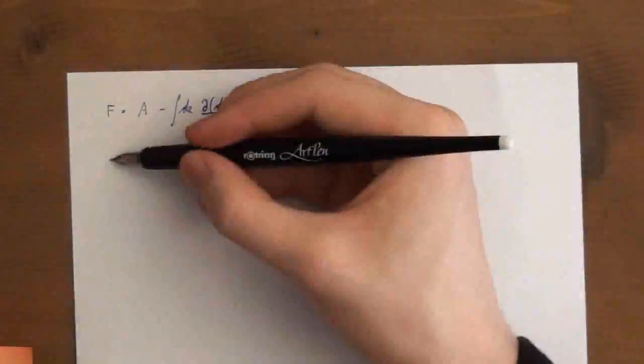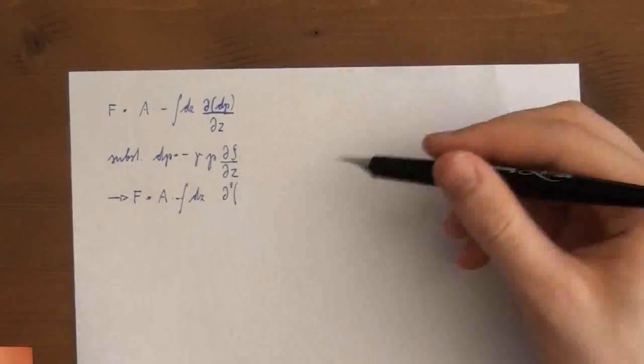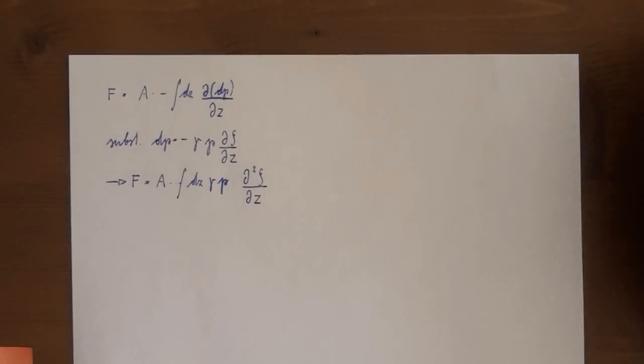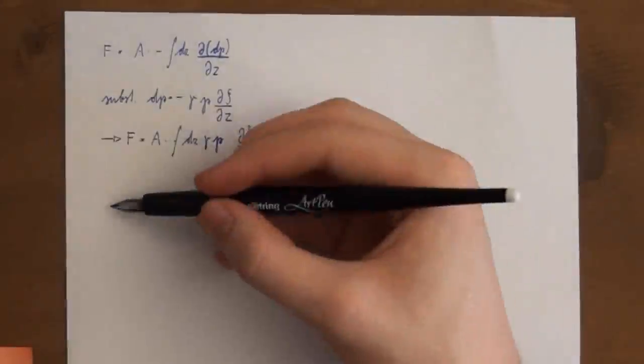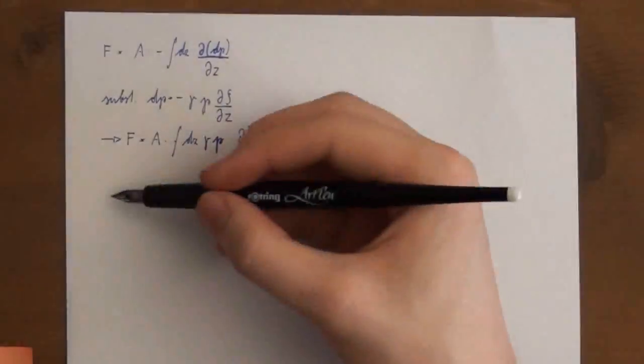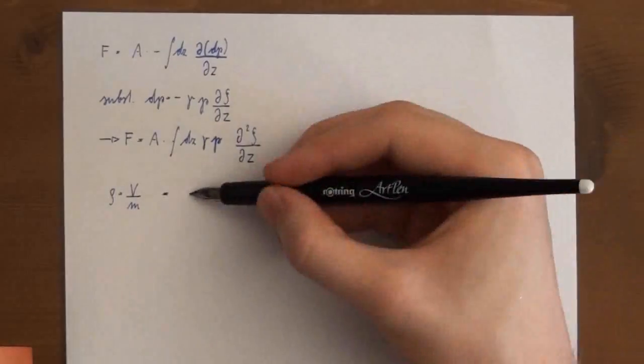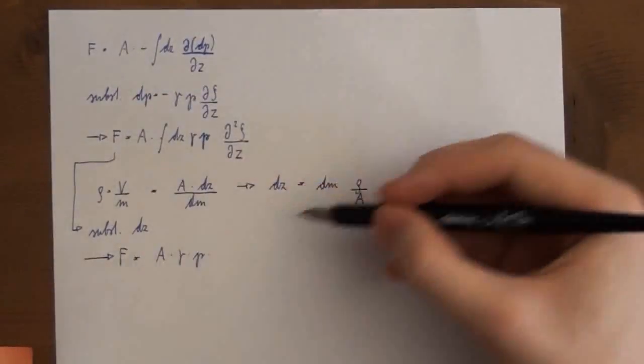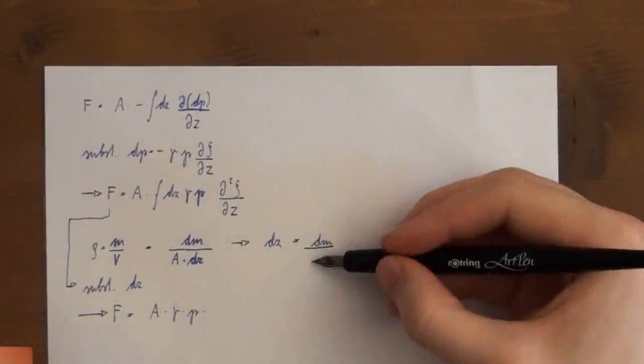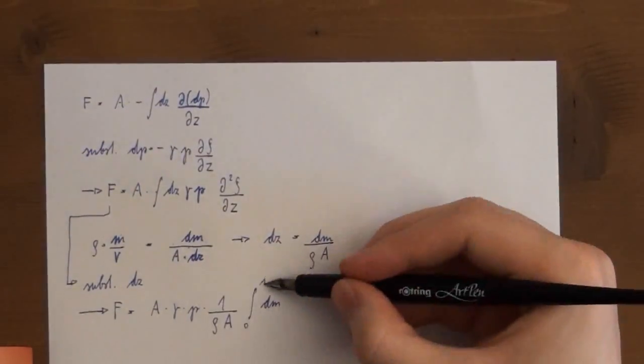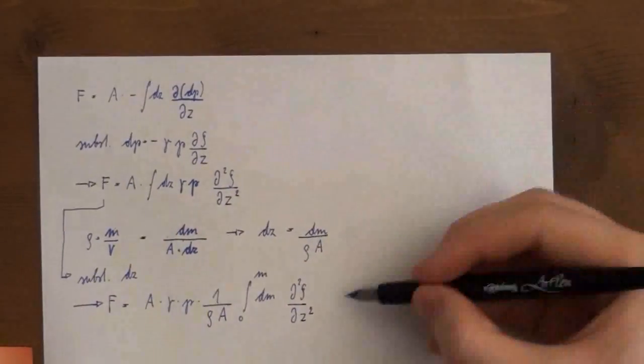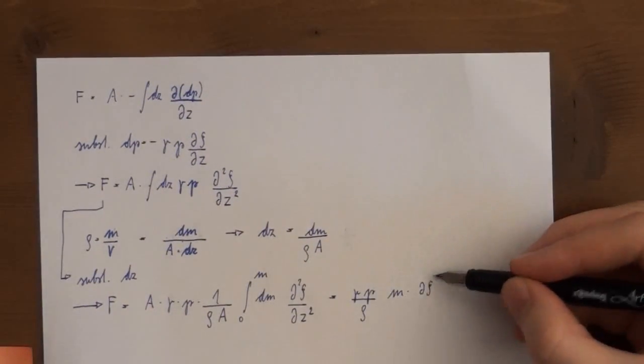We go back to the force equation and substitute DP by this expression. This gives us the second derivative of zeta. Further we need to replace the differential dz. The volume for our given section is A times dz. We know that density is mass divided by volume. And because the volume we consider is infinitesimal the mass must also be infinitesimal. We transpose this to get an expression for substituting dz. Finally we solve the integral for an interval from 0 to m.